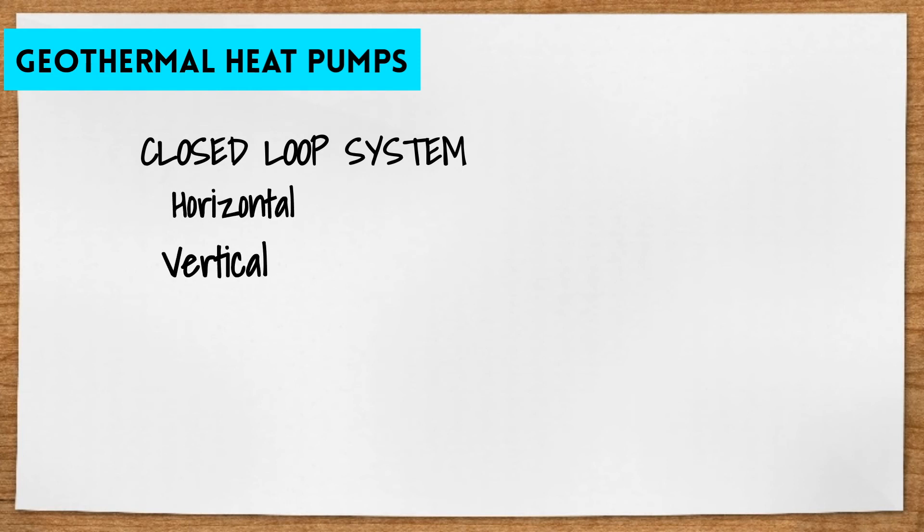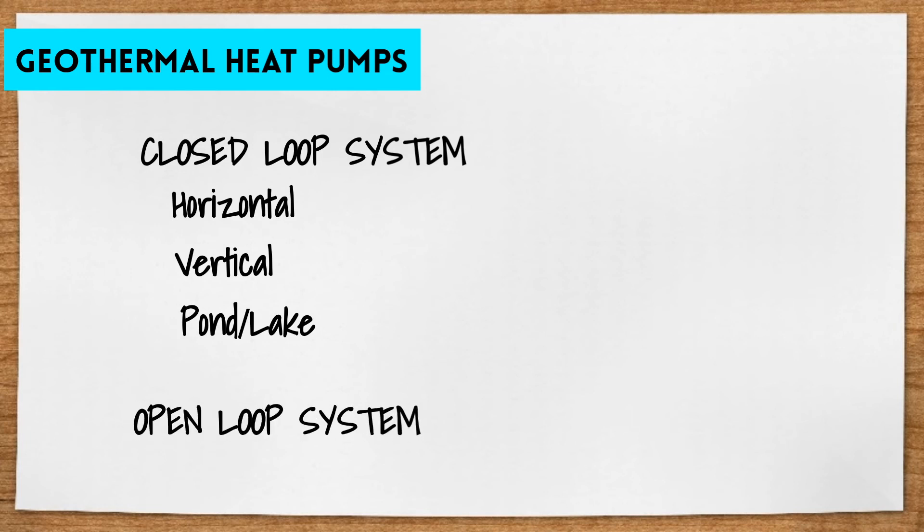So let's review. There are four major types of geothermal systems. Three are closed loop systems: horizontal, vertical, and pond or lake. And the last is the open loop system.